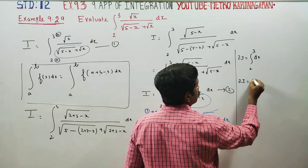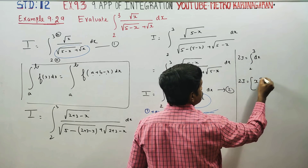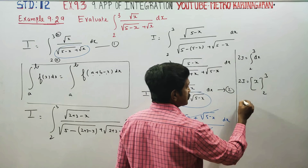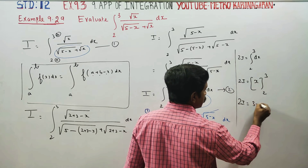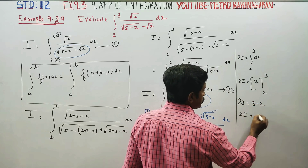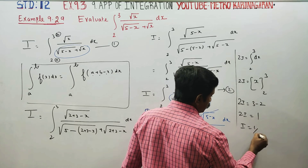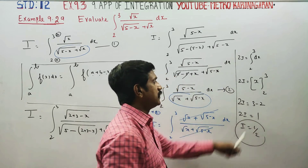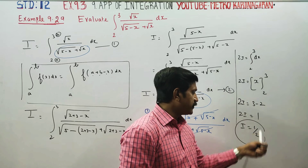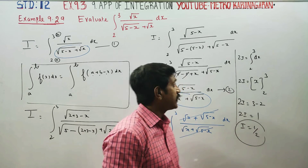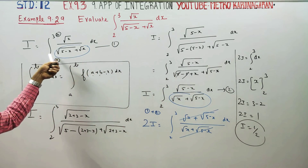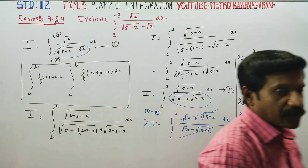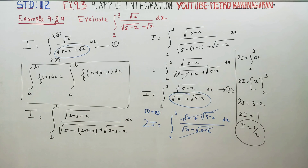2I equals the integration of dx from 2 to 3, which is the upper limit minus the lower limit. So 2I equals 3 minus 2, which is 1. Therefore I equals 1 by 2. The value of this integral is 1/2. Thank you.